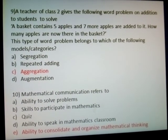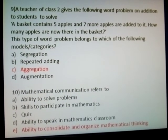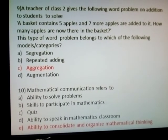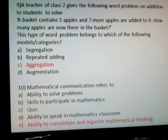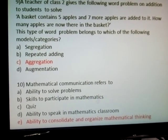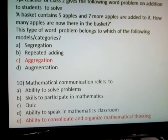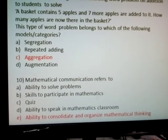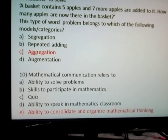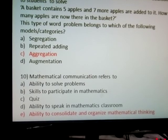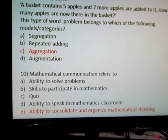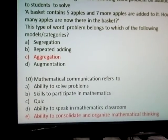Ninth question: a teacher of class 2 gives the following word problem on addition to students to solve. A basket contains five apples and seven more apples are added into it. How many apples are now there in the basket? This type of word problem belongs to which of the following models? Answer: this belongs to the aggregation category. It is a very important question.